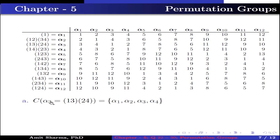Part A: we have to find the centralizer of alpha 3 = (1 3)(2 4), meaning we choose those elements that commute with alpha 3. From the table, alpha 1 times alpha 3 equals alpha 3 times alpha 1; alpha 2 times alpha 3 equals alpha 3 times alpha 2; alpha 3 commutes with itself; and alpha 4 times alpha 3 equals alpha 3 times alpha 4. This implies the centralizer of alpha 3 contains the elements alpha 1, alpha 2, alpha 3, and alpha 4.